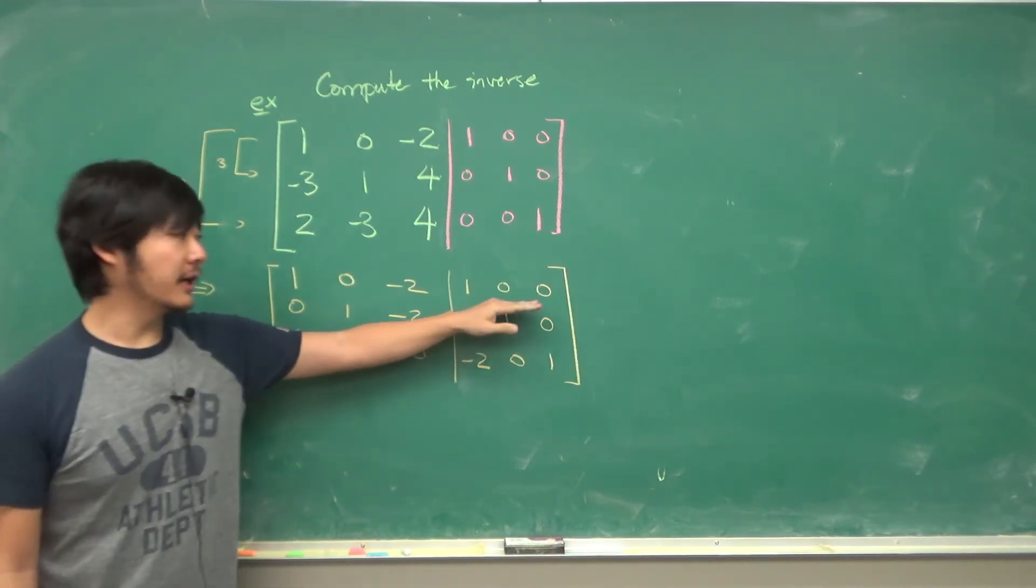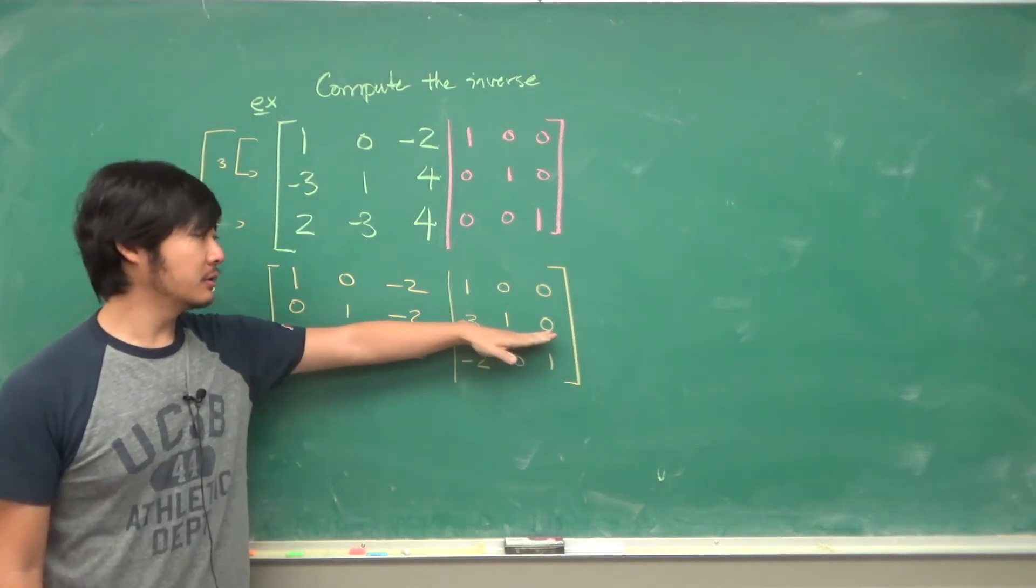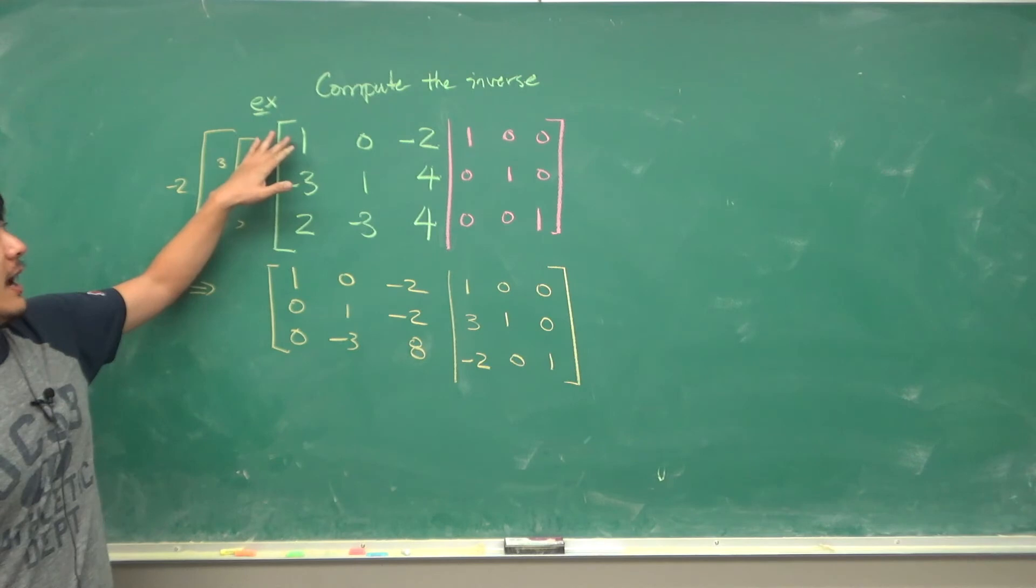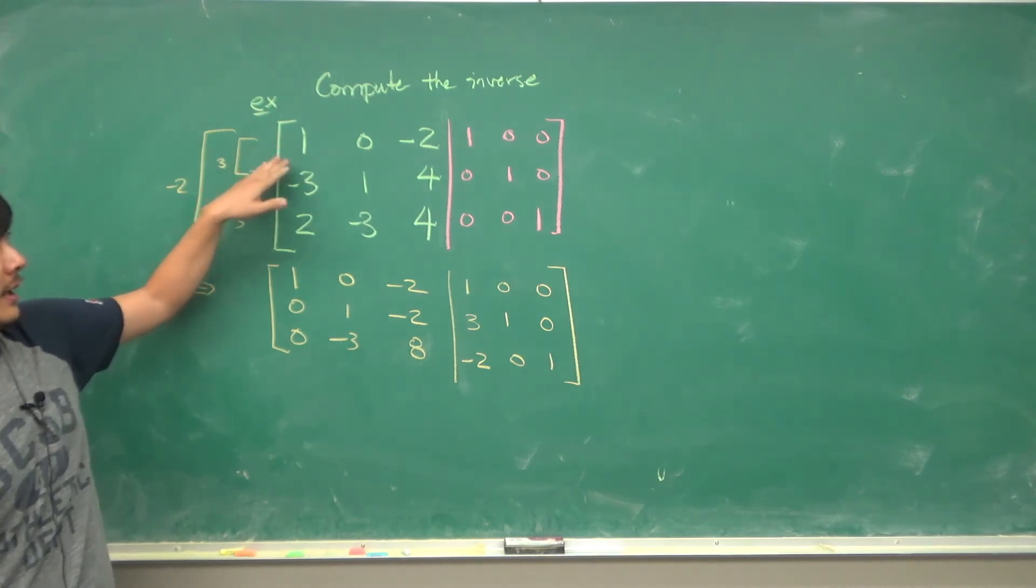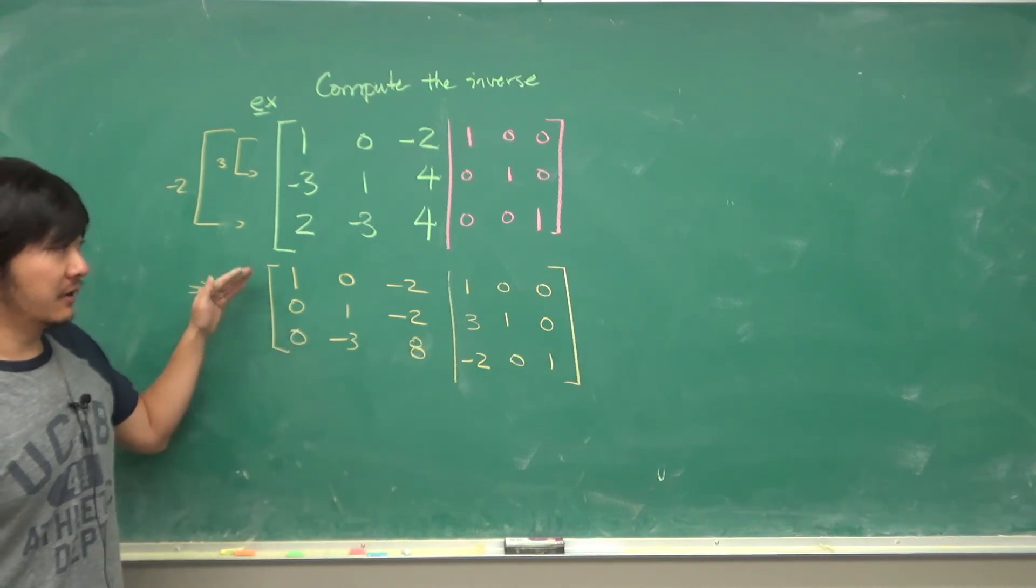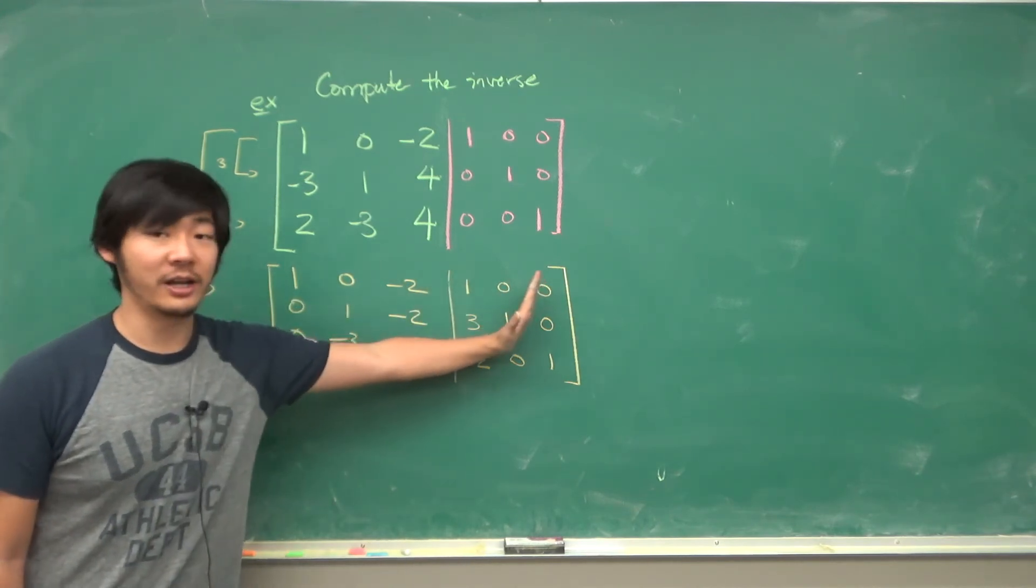Now remember not to forget to apply your row operations to this side as well as this side of the same type. So here we added 3 times row 1 into row 2, so 3 times row 1 into row 2, or you can just think of this matrix as one giant matrix.